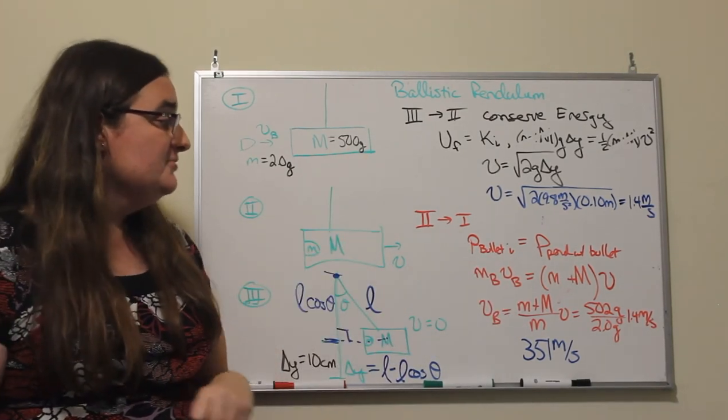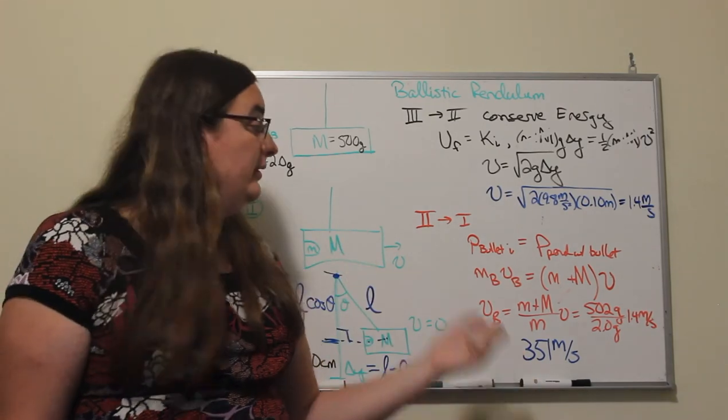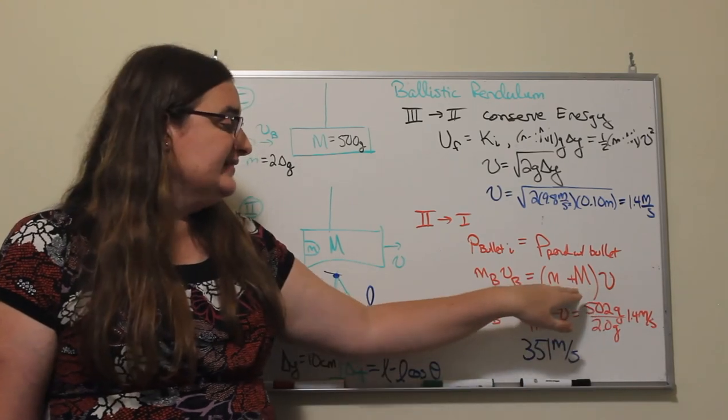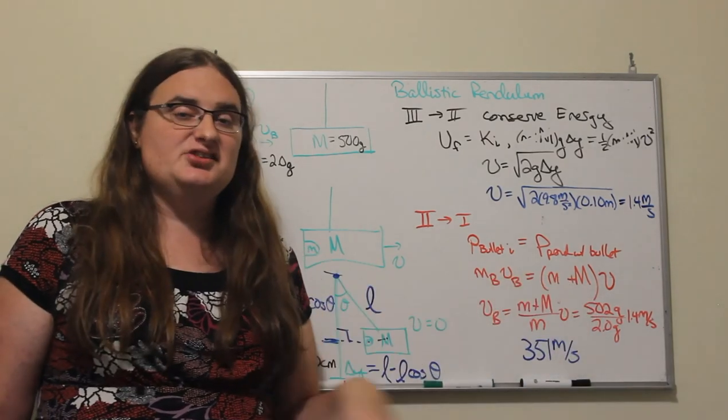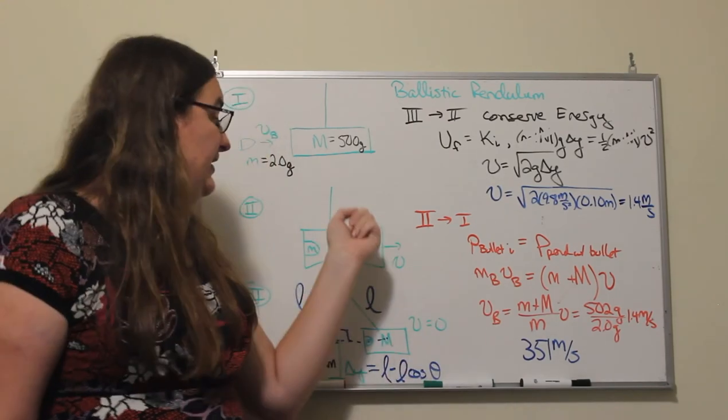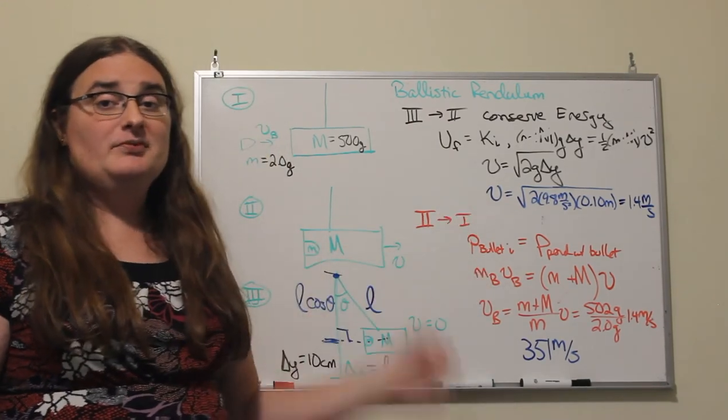A non-moving object has no momentum. After the collision, we have only one object, and its mass is the sum of the two masses times the speed that we just found of that object at the bottom of its swing.